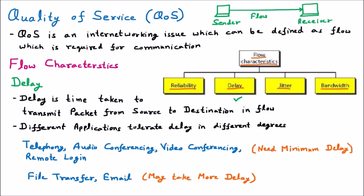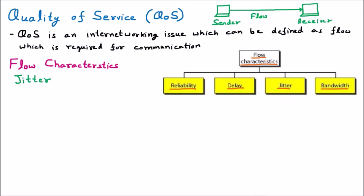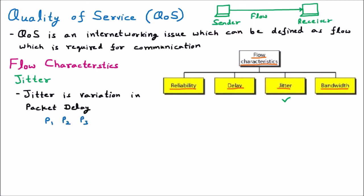The next flow characteristic is jitter. Jitter is the variation in packet delay. To understand jitter, suppose we have 4 packets: P1, P2, P3, and P4 at the source. They depart at times 0, 1, 2, and 3 respectively — this is the packet departure time.